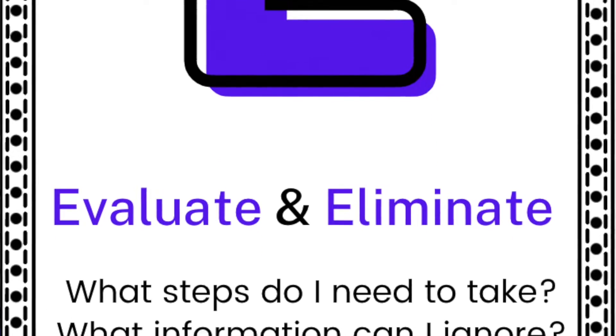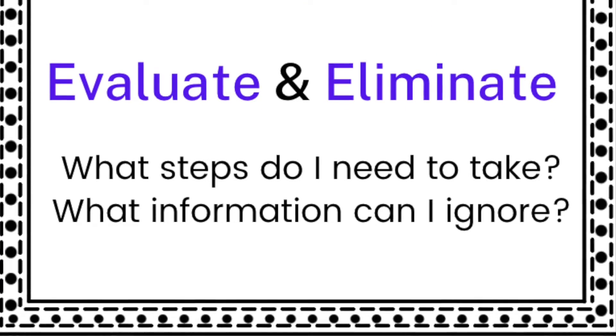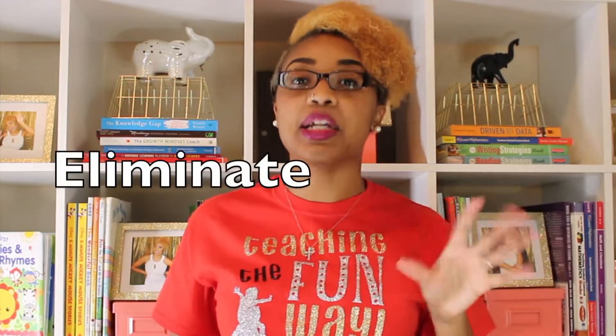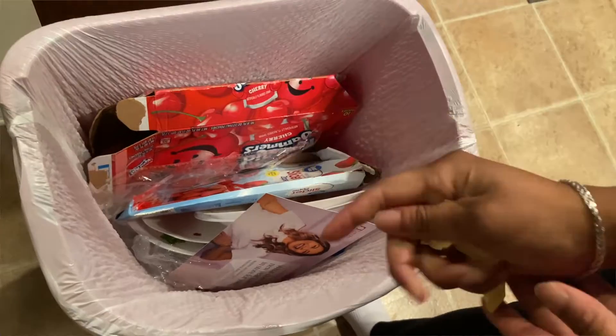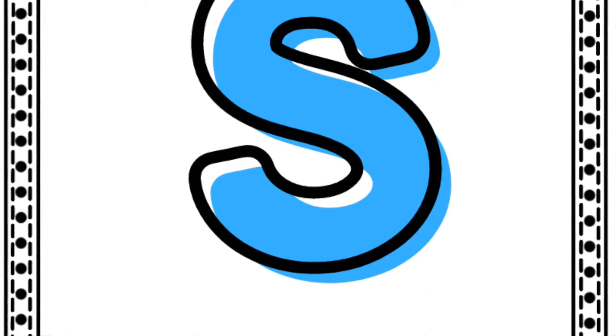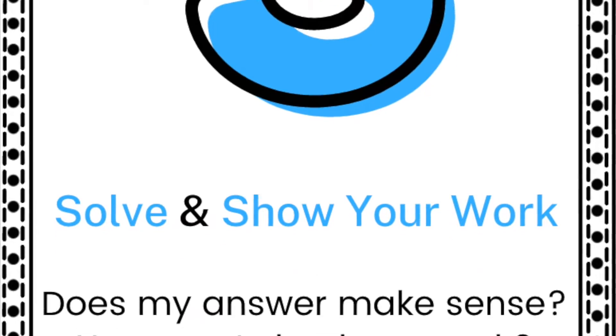Next you want children to evaluate exactly what steps they would have to do in order to solve the word problem. Most word problems have multiple steps, so children will simply write down all the steps they would need to do. Now the E actually stands for two steps: evaluate and also eliminate. You want children to eliminate — cross out, get rid of — any words that are simply useless, so pretty much anything that's not a circle, underline, or box. Last but not least, the S stands for solve and show your work.